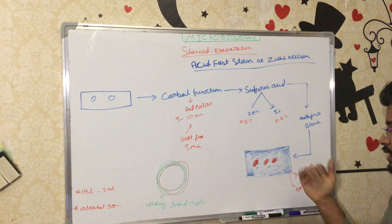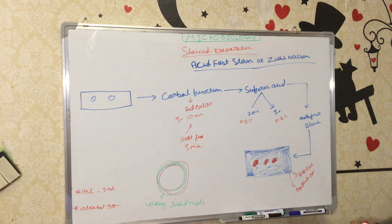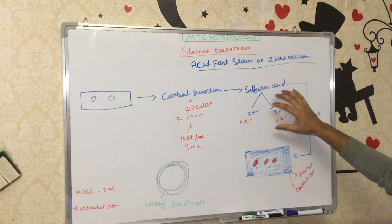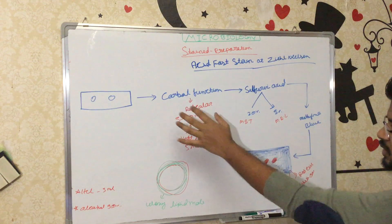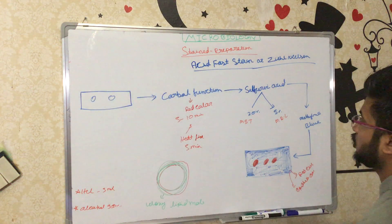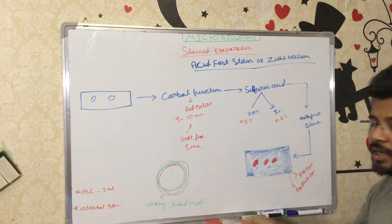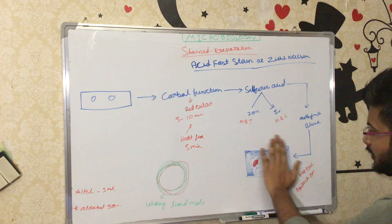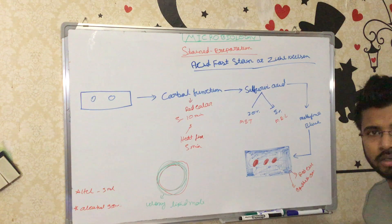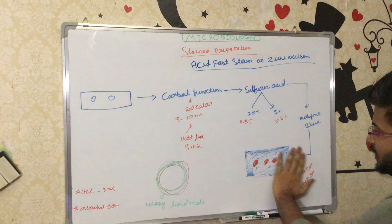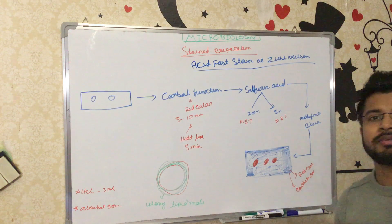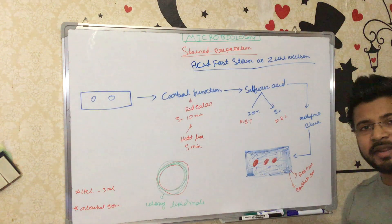The sulfuric acid (H₂SO₄) washes out the background red color. Carbol fuchsin stains everything red — both the bacteria and the slide background — but sulfuric acid only washes out the background red, not the red within the mycobacterium. Then methylene blue is added to color the background blue, making it easy to identify mycobacterium species.